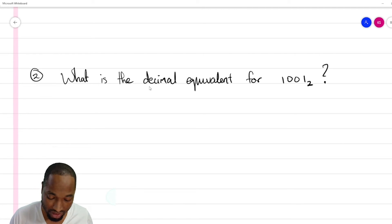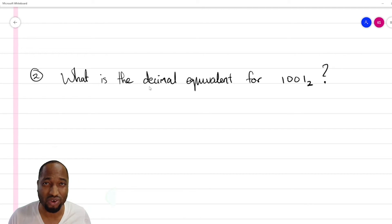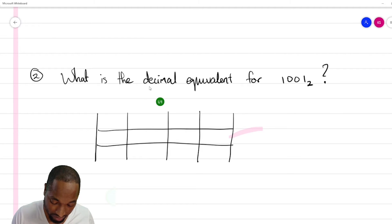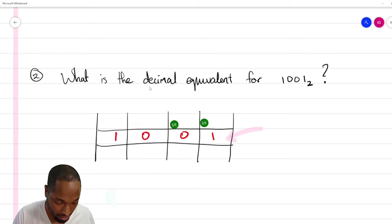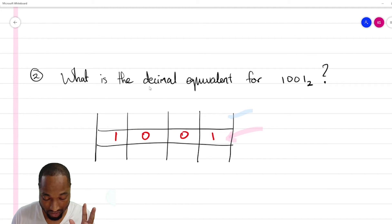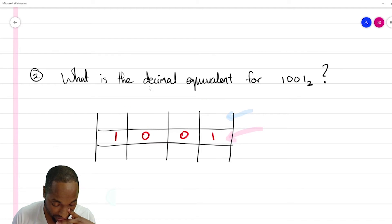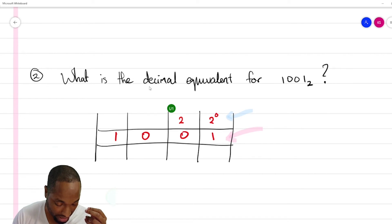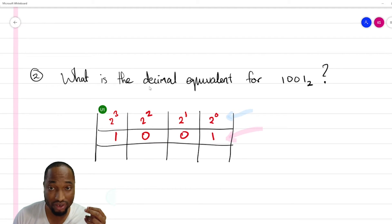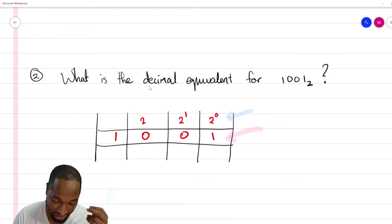If you started off in base 2 and want to get back your decimal number, the fastest way is to draw a table. In one part of the table we put the number itself. In the other part we put the place values — not ones, tens, hundreds, but powers of two: two to the power of zero is 1, two to the power of one is 2, two to the power of two is 4, two to the power of three is 8.